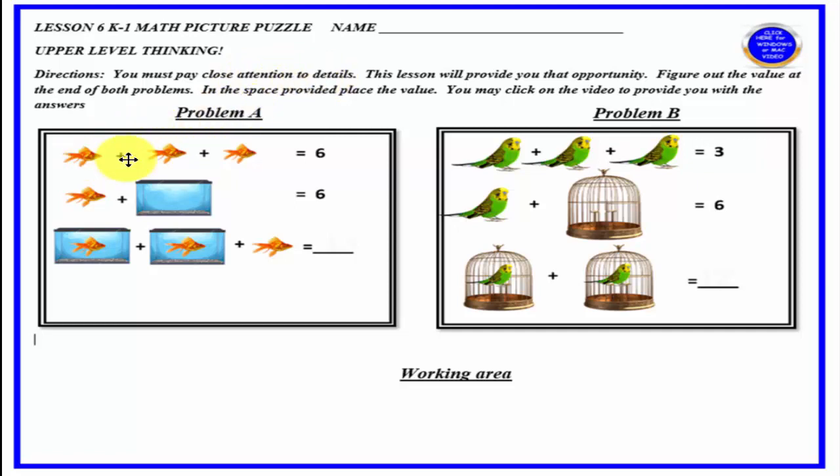You'll notice we have three goldfish up here and one here. We have a fish tank here, and we'd like for you to determine the total when you add these up. Here we have a parakeet, a birdcage, and we'd like for you to figure out the total if you add these up together right here. Make sure you pay attention to details.